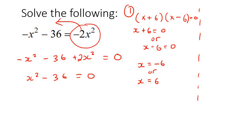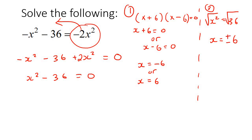Your other option is to take the 36 over to the other side, ending up with x squared equals 36. Then you square root both sides — because what you do to one side, you do to the other — giving x equals the square root of 36, which is 6. But you must always remember to write plus and minus whenever you take a square root, so x equals plus or minus 6.